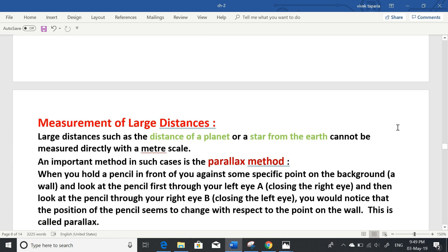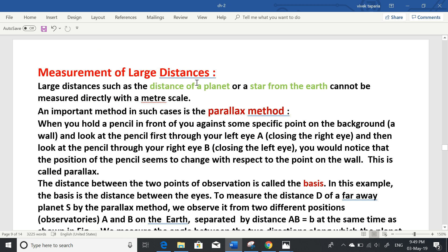Measurement of large distances such as the distance of a planet or a star from the earth cannot be measured directly with a metre scale. For example, to measure the moon's distance, Neil Armstrong placed a mirror on the moon, and we sent a laser beam which reflected back to verify the distance. An important method in such cases is the parallax method.